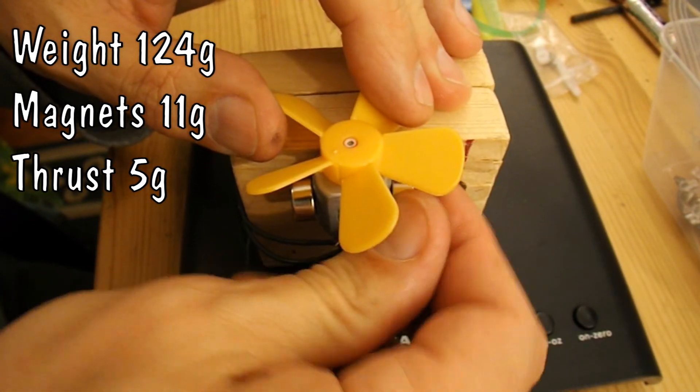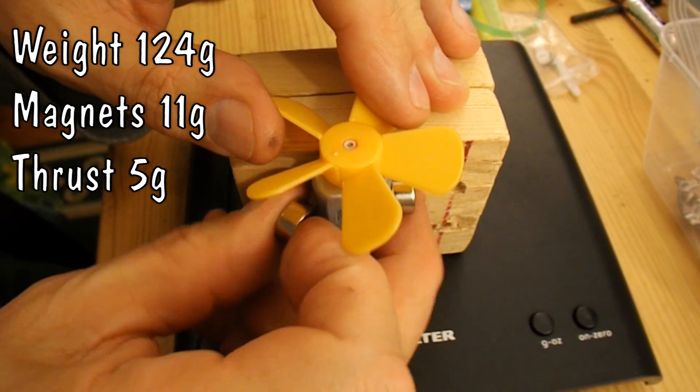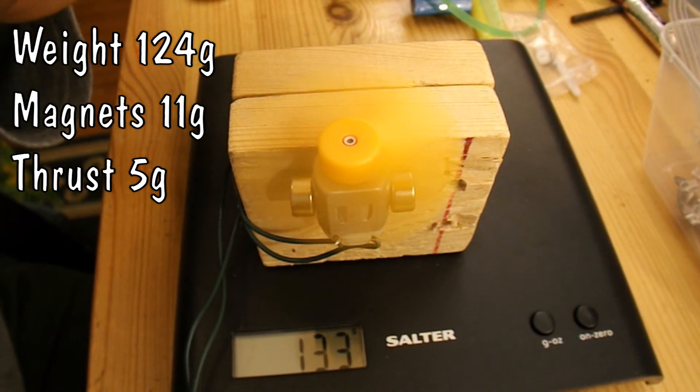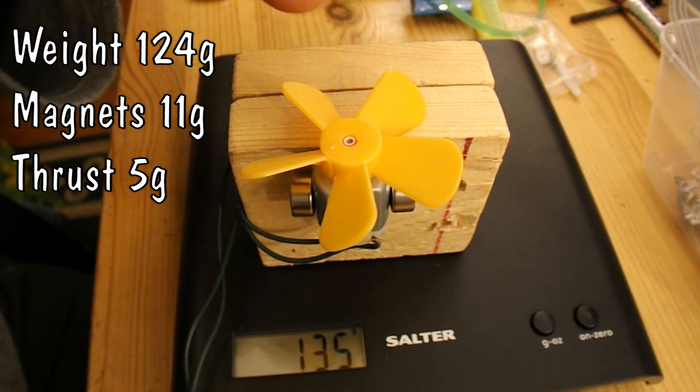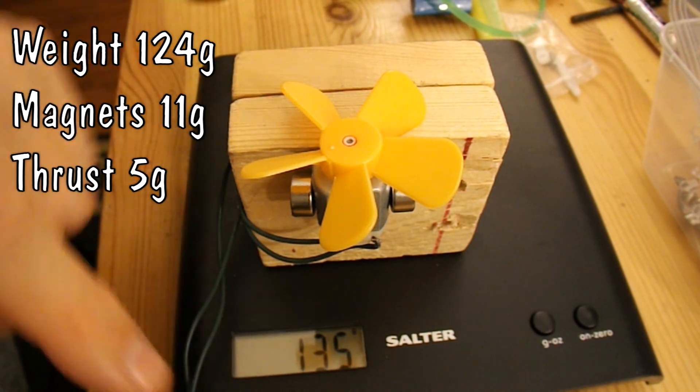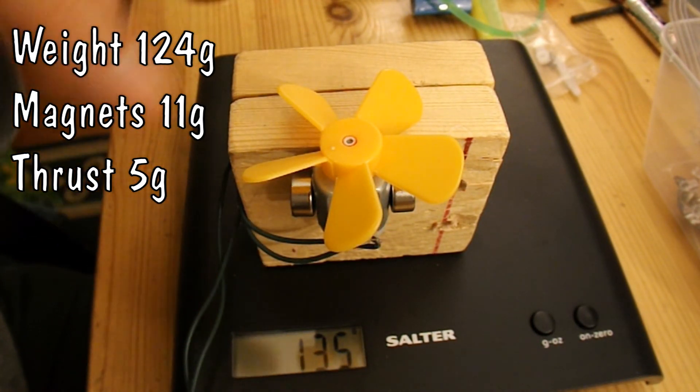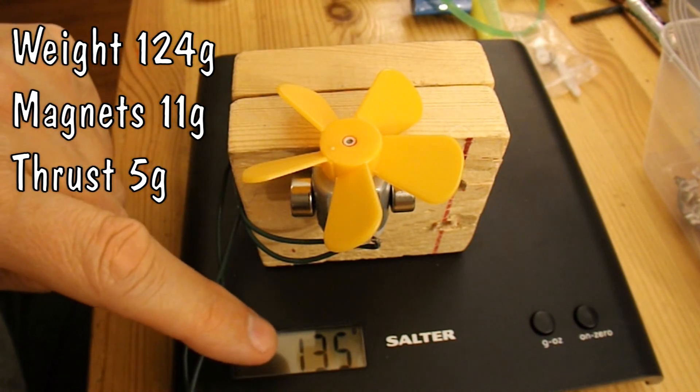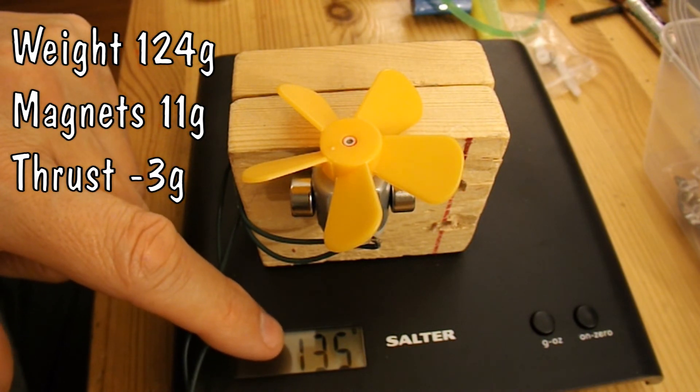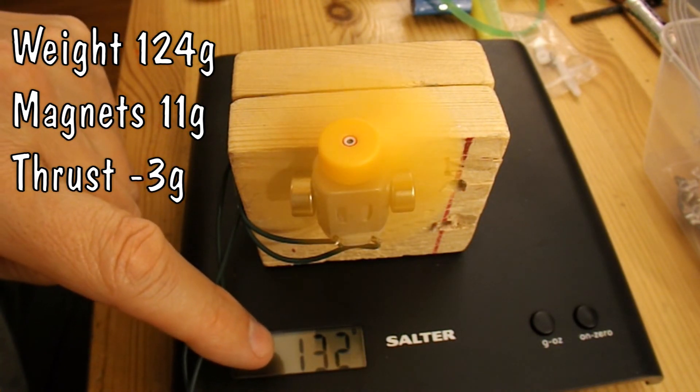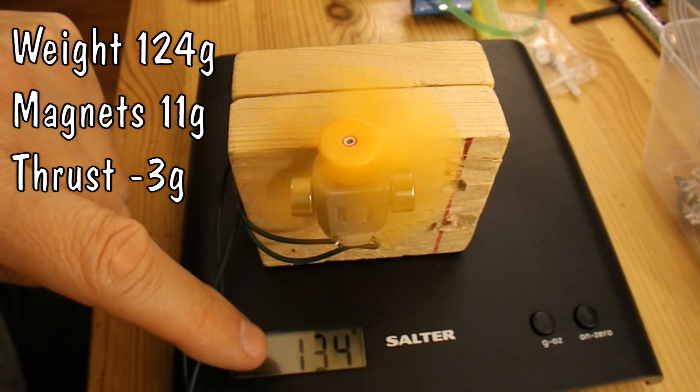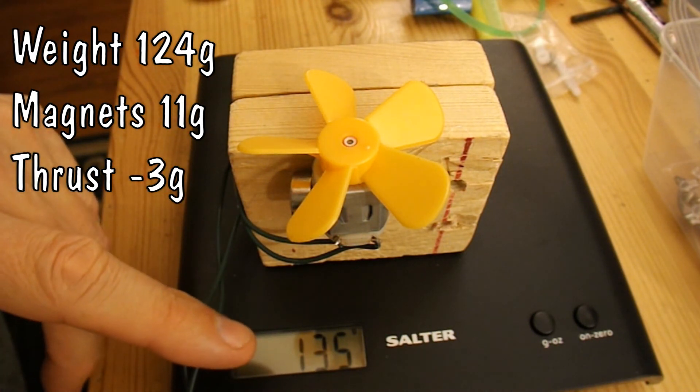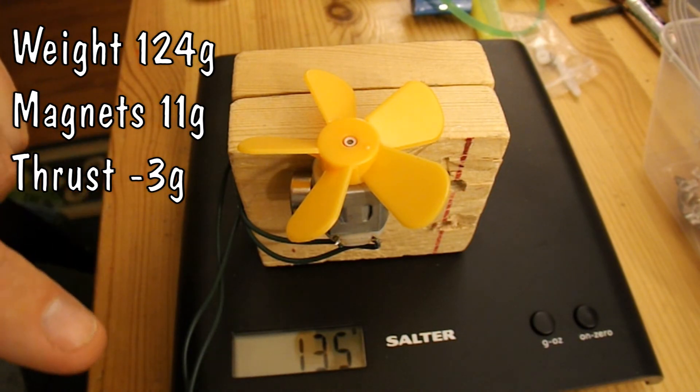If I turn that one round, and that one round... Yes, they're completely overriding the magnets that are in the motor. I've reversed their polarity, and now the motor's turning the opposite way, and it's actually trying to lift rather than push. And it goes 135 to 132. So it's actually lifting with 3g of lift thrust.